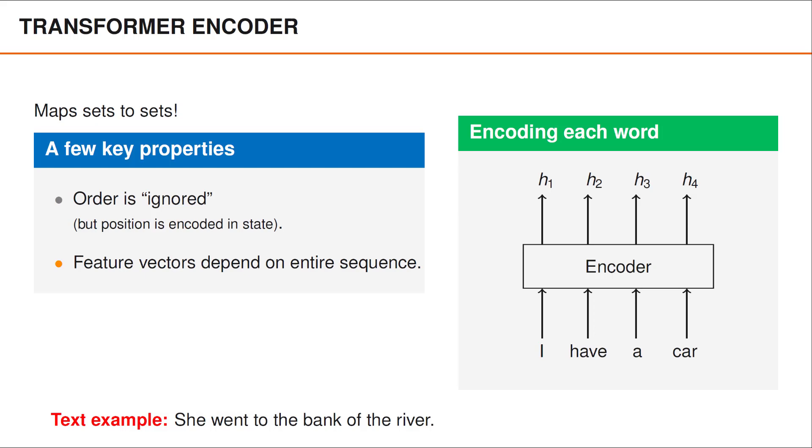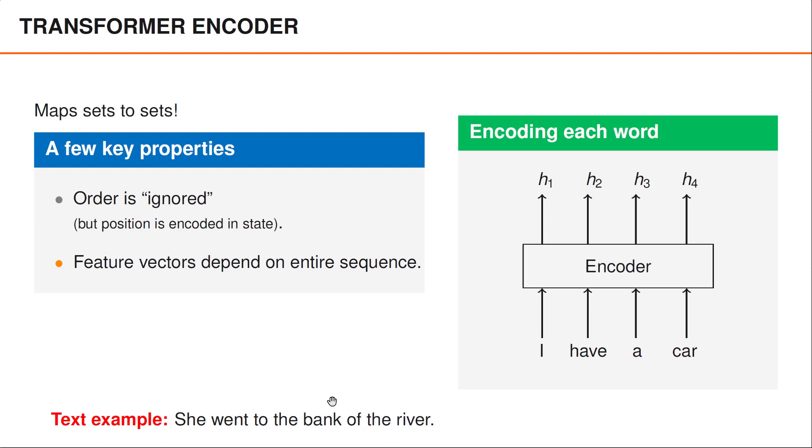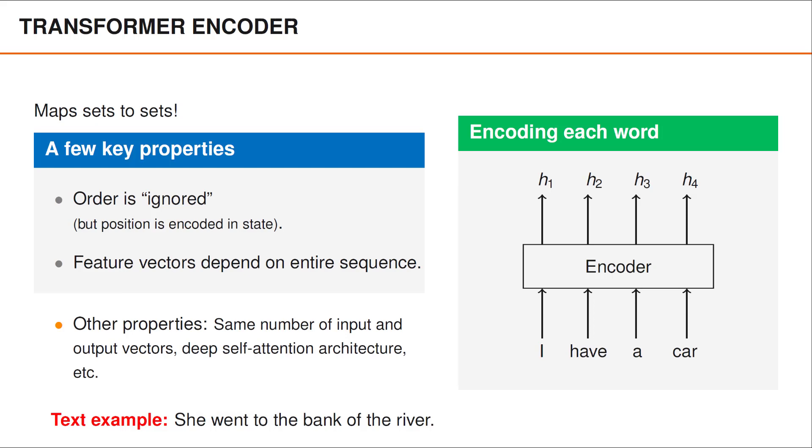Also, for each input vector, it returns a new vector that depends on all the input vectors. Compared to RNNs, this means that feature vectors can depend on words that appear later in the sentence. As an example, the word bank could receive a feature vector that includes the fact that it is a river bank.